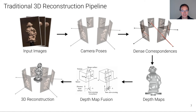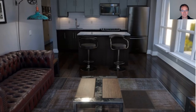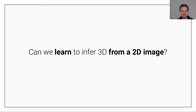While most traditional 3D reconstruction pipelines require huge amounts of images, humans can actually recognize 3D from a single 2D image. If I show you this image, you can easily tell me which object is in front of which object, what is the approximate distance to the refrigerator, or what will happen if I move forward. The question I like to ask is: can we learn to infer 3D from a 2D image as input?